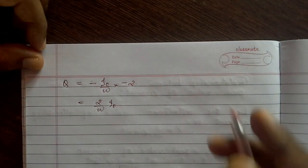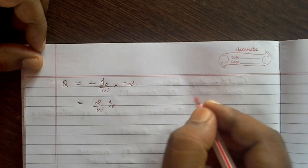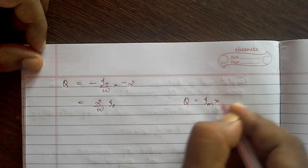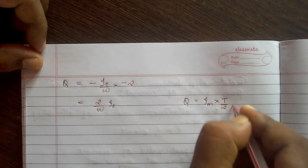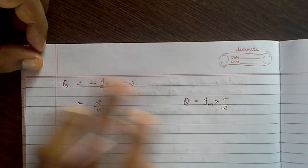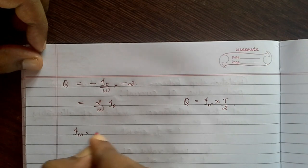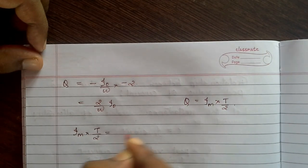In the previous derivation we have found out that for direct current, q equals Im into T by 2. Equating this equation with this, we can write Im into T by 2 equals 2 by omega into i0.